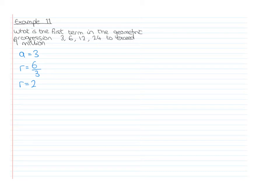So we've got A is 3, R is 2, and we want to find the first term to exceed 1 million. We know a term in our geometric sequence is given by Un equals A multiplied by R to the power N minus 1. So we just want to find out for what N is this greater than 1 million.